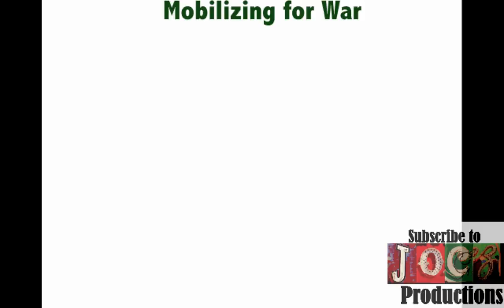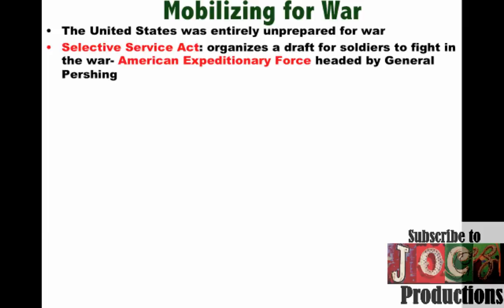When the war starts, the United States is completely unprepared for war. We have a lack of fighting men, factories are not prepared for war production, and the country has to mobilize for war. One of the first things they do is pass the Selective Service Act, which basically starts conscription or a draft — organizing a draft for soldiers to fight in the war. All men between a certain age have to register. The big fighting force under General Pershing will be known as the American Expeditionary Force, and they will do a lot of the heavy fighting over in Europe near the end of the war.